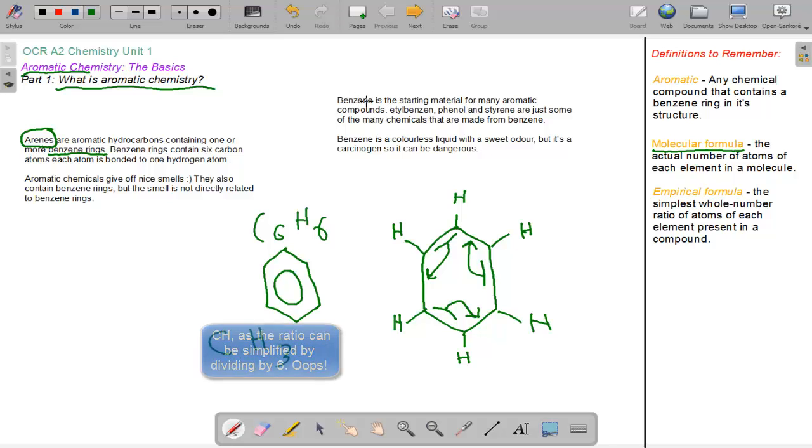Benzene is the starting material for many aromatic compounds - ethyl benzene, phenols, and styrene, just some of the many chemicals that are made from benzene. Benzene is a colourless liquid with a sweet odour. This is why aromatic chemistry is called aromatic chemistry, because odours can also be called aromas.